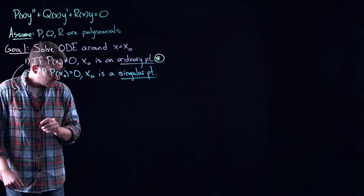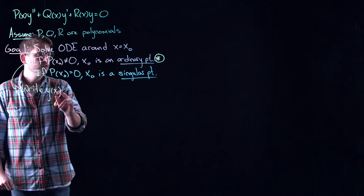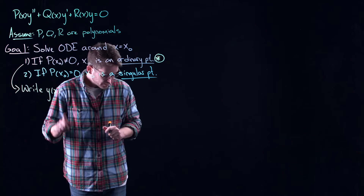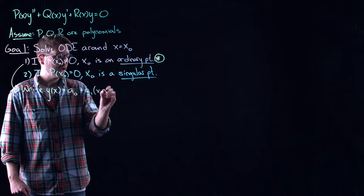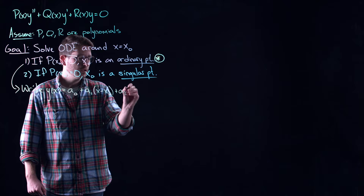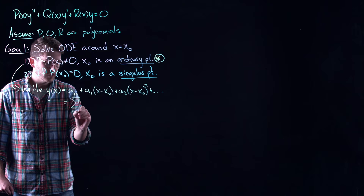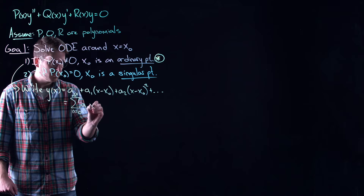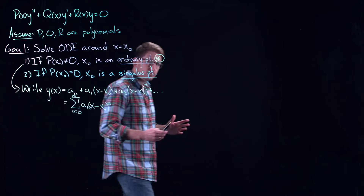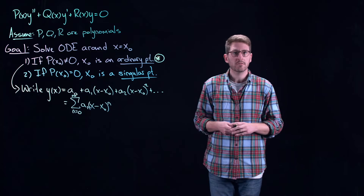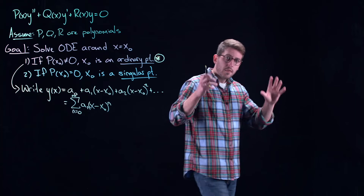At ordinary points, the solution is guaranteed to exist by our existence and uniqueness theory, so we are going to write y as a power series: a₀ plus a₁(x − x₀) plus a₂(x − x₀)² and so on, which we write using standard power series notation. The basic premise is that we assume y has that form and then substitute it into the differential equation and do our best to solve.